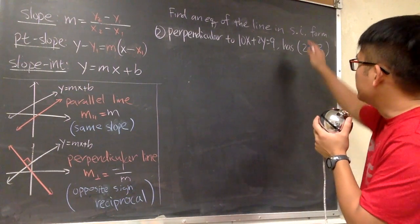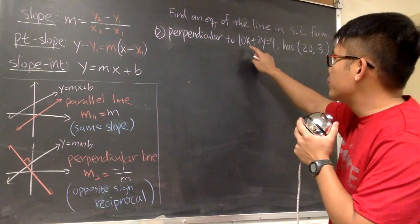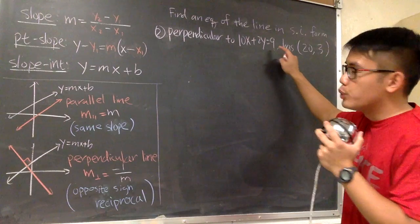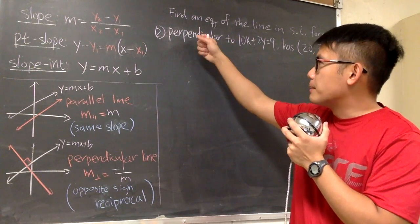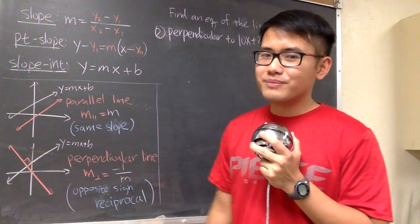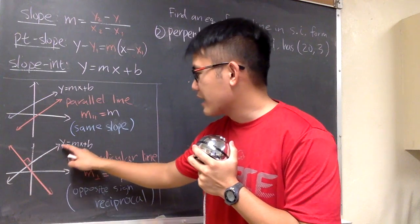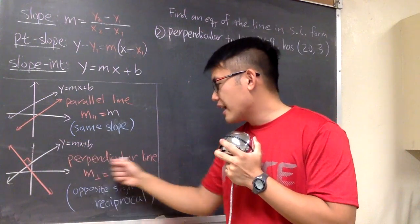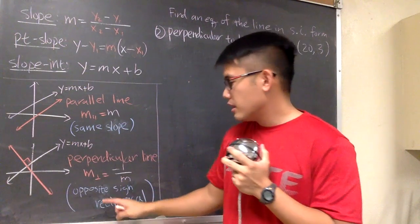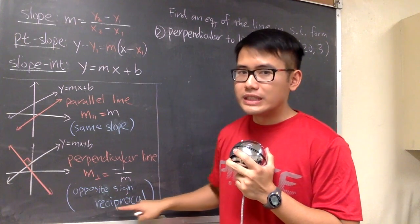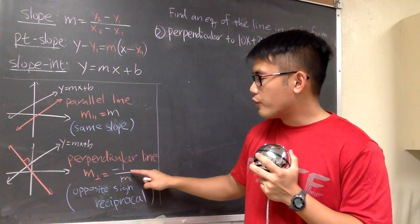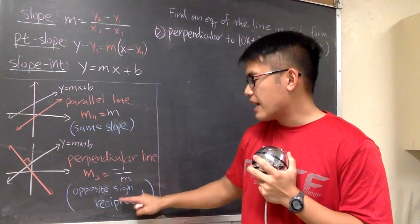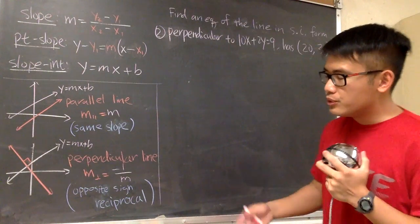Now let's look at the second situation. For the second example, I'm going to go over how to write an equation of a line in slope-intercept form, and that line shall be perpendicular to the given line: 10x plus 2y is equal to 9. This line shall have the point (20, 3). The question is talking about a perpendicular line, so we have to talk about perpendicular slope. If this is your given line y equals mx plus b, the slope of any line perpendicular to the original is going to be the opposite sign and we have to do the reciprocal. This is the notation for the perpendicular slope, and this formula, negative 1 over m, means opposite sign and reciprocal. You should remember this phrase — it will help you remember what to do.